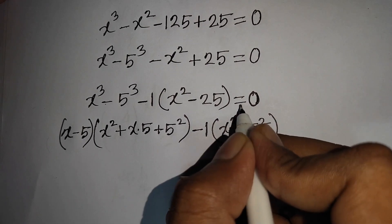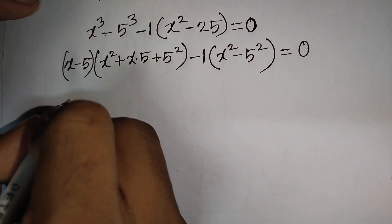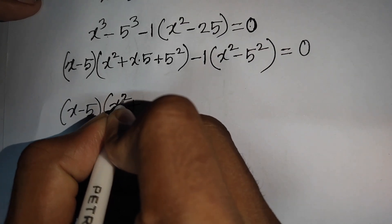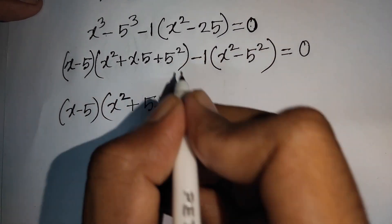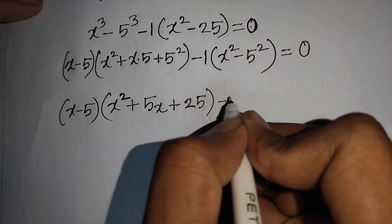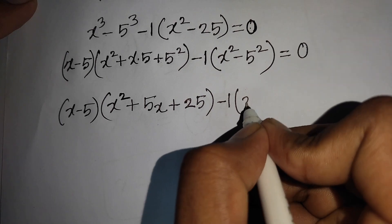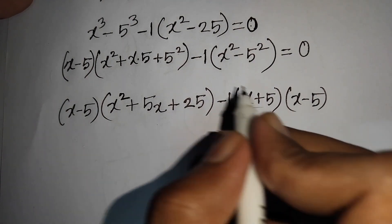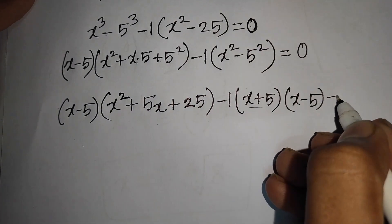We now have bracket (x - 5)(x² + 5x + 25), then minus 1 times x² minus 5² bracket close, equal to 0. Here we can apply the formula a² - b², so we write (x + 5)(x - 5), where a = x and b = 5, equal to 0.